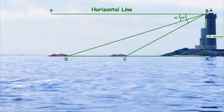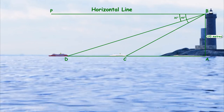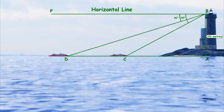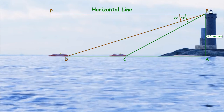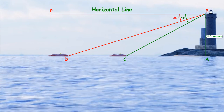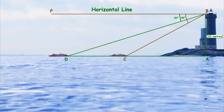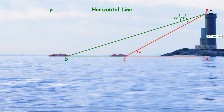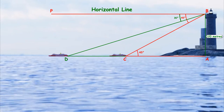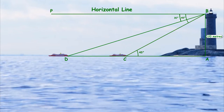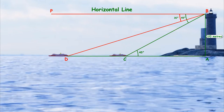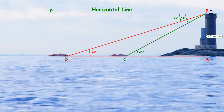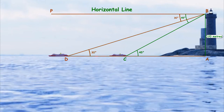Hence, as earlier discussed, the angle of depression for the first ship, or angle PBC, is 45 degrees. And the angle of depression for the second ship, or angle PBD, is 30 degrees. Now, since angle PBC is 45 degrees, angle BCA will also be 45 degrees, because they are both alternate angles. Similarly, since angle PBD is 30 degrees, angle BDA will also be 30 degrees, because they are both alternate angles.